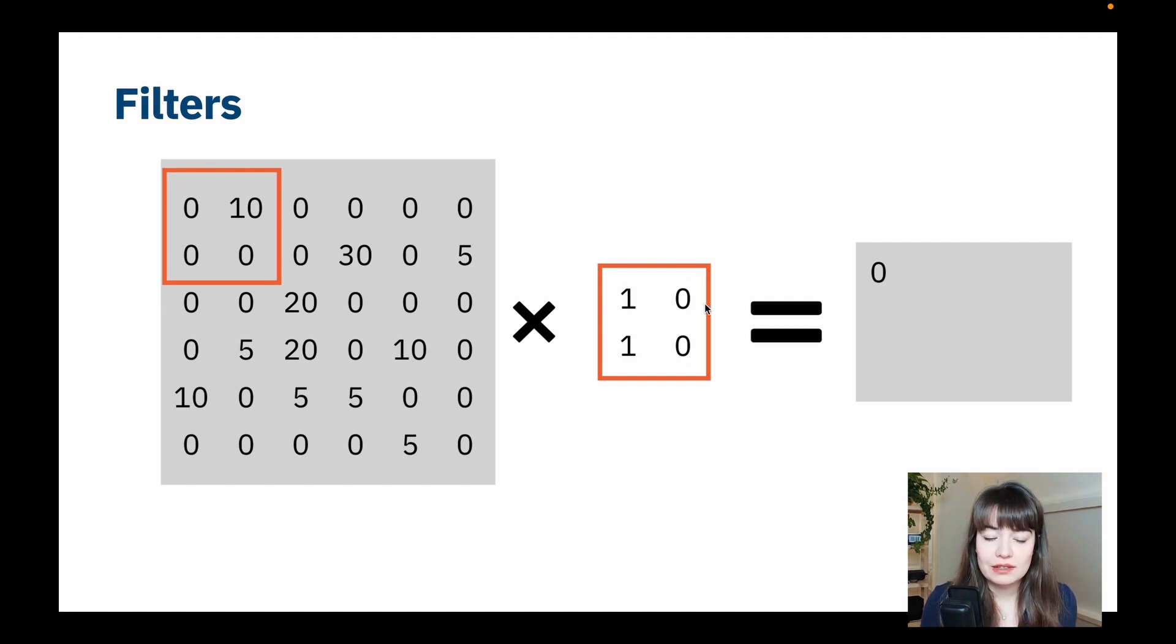So if we take this little matrix, paste it on top of here, what we have is 1 times 0, 0 times 10, 1 times 0, and 0 times 0. So the output is 0.